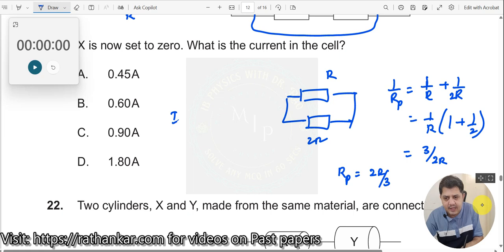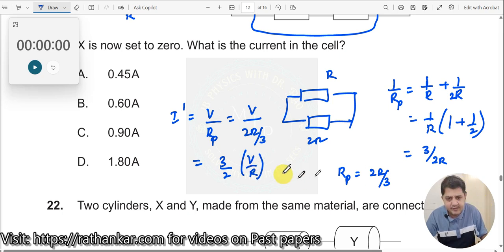Now what is the new current? I dash would be equal to V by Rp which should now be equal to V divided by 2R by 3, which would be 3 by 2 into V by R. So this 3 goes upwards, 2 comes downwards, you get 3 by 2 into V by R.